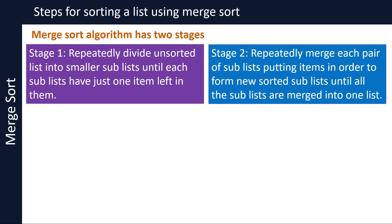In stage two, each pair of sublists is repeatedly merged to form new sorted sublists, putting items in order, until all the sublists are merged into one list. Merging the final two sublists forms the sorted list. Merge sort algorithm is also known as divide and conquer, as you repeatedly divide the list into smaller sublists to make it easier to conquer or solve the problem.